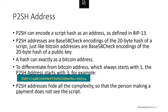Another aspect of the pay-to-script hash feature is the ability to encode a script hash as an address, as defined in Bitcoin Improvement Proposal 13. P2SH addresses are Base58Check encodings of the 20-byte hash of a script, just like Bitcoin addresses are Base58Check encodings of the 20-byte hash of a public key. P2SH addresses use version prefix 5, resulting in a Base58Check encoded address that starts with '3', as opposed to a Bitcoin address that typically starts with '1'. These addresses hide all the complexity so that the person making a payment doesn't even realize there's a script.